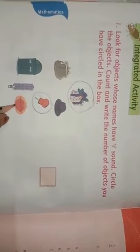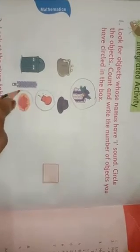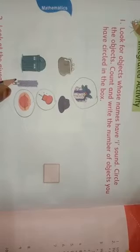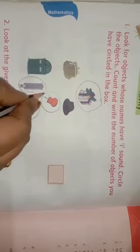Then this is lip. L-I-P. Lip is also I sound, so we circle here. This is zip. Z-I-P zip. This is I sound word, so we circle here.